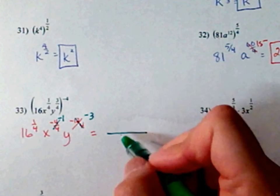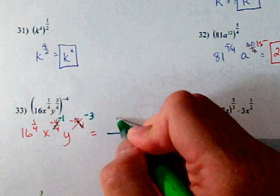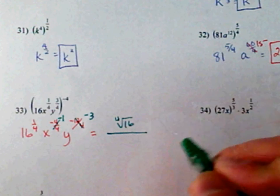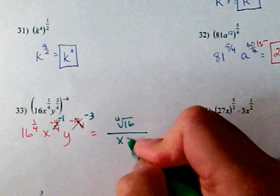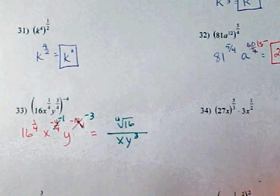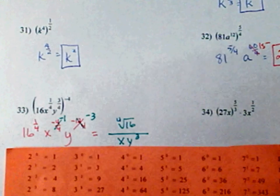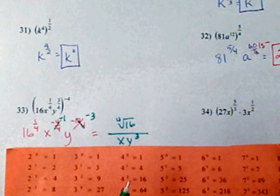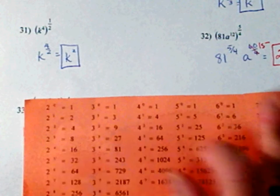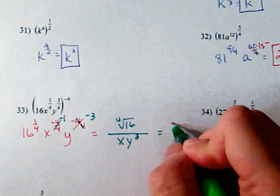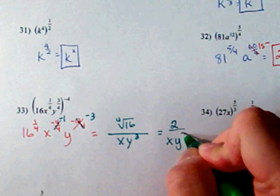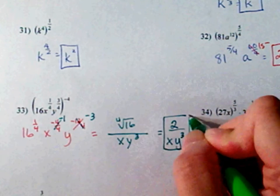So, now you have 16 to the 1/4, which is the same thing as the 4th root of 16. Bring down your x. Bring down your y to get rid of your negative exponents. What is the 4th root of 16? Let's take a look. That's the same thing as 2. So, your final answer is 2 over xy to the 3rd. Always try to make it small.